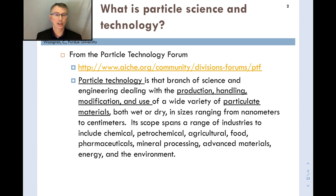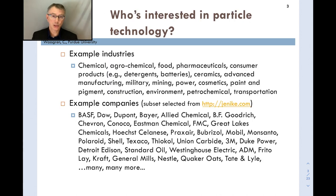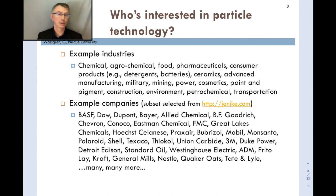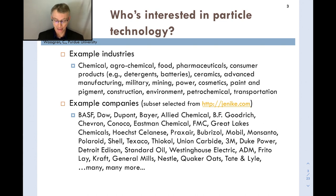Particle science and technology is very common in industry and spans a wide range of sectors — from mining and production of particulate materials all the way to their end use. Industries interested include chemical, agrochemical, pharmaceuticals, food products, agriculture (e.g., harvesting corn, wheat, soybeans — all in particulate form), consumer products like detergents and batteries, and the military, since many energetic materials such as explosives and solid rocket motor propellants are often in particulate form during handling.